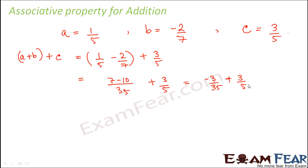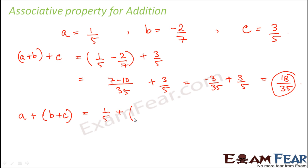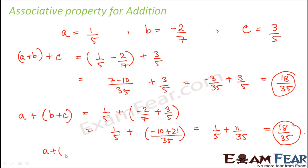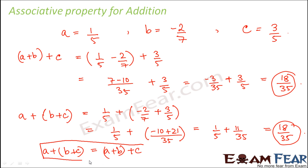Adding minus 3/35 plus 3/5 gives 18/35. Now we calculate (a plus b) plus c, which is (1/5 + (-2/7)) + 3/5. That gives minus 3/35 plus 3/5, which again comes out to 18/35. Comparing the two values, a plus (b plus c) equals (a plus b) plus c, so the associative property holds true for addition of rational numbers.